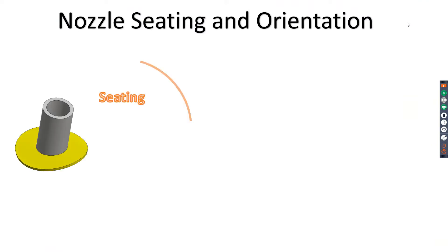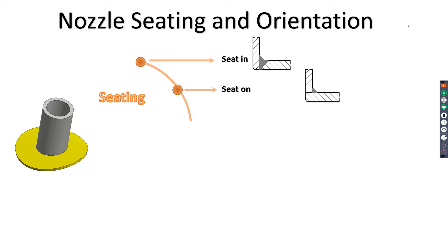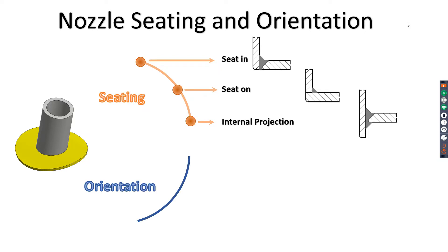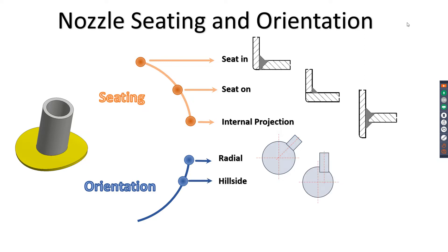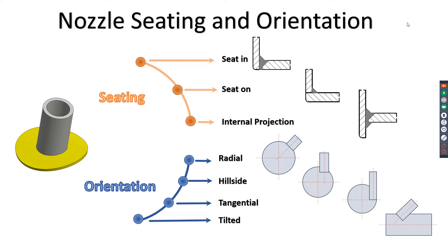Now we discuss nozzle seating and orientation. The seating of nozzles can be defined as seat-in, where the internal side of the shell is the control surface for the nozzle end, or seat-on with internal projection. Regarding nozzle orientation, we have radial nozzles, helical nozzles, tangential nozzles, or tilted nozzles. Sometimes we can mix between those — for example, a helical nozzle combined with a tilted nozzle, or a tangential nozzle combined with a tilted nozzle.